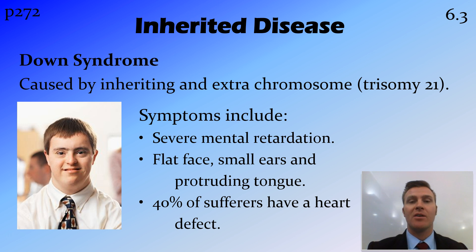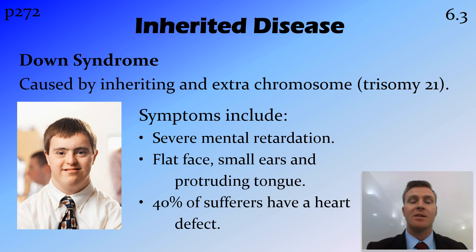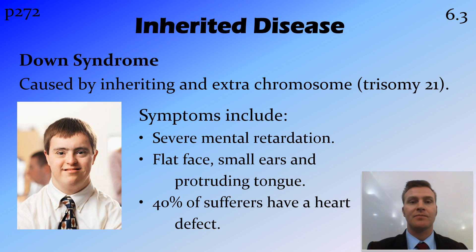An example of an inherited disease is Down syndrome. Down syndrome is caused by trisomy 21 — that's three chromosomes in the 21st pair of chromosomes, so you've got an extra chromosome there. This is caused by non-disjunction during meiosis. There are some fairly serious symptoms, both physical and mental, and about 40% of sufferers have a congenital heart defect as well. Unfortunately, there is no cure for it.